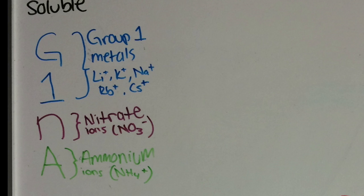Then comes the N in Gina, which is the nitrate ions, which are NO3 with a negative charge. Then comes the A, which is the ammonium ion, which is NH4 with a plus charge.